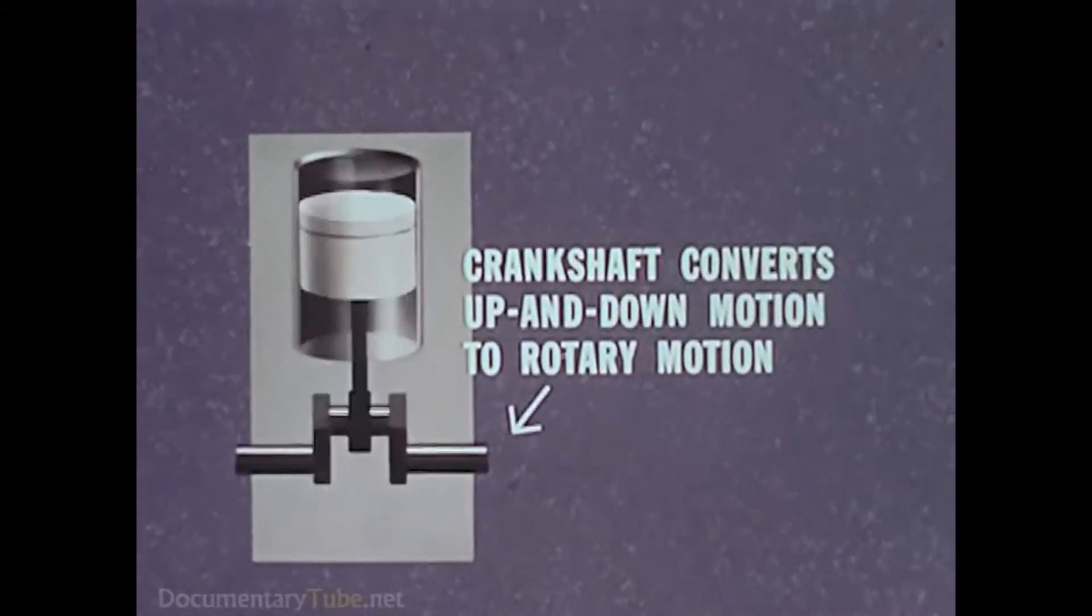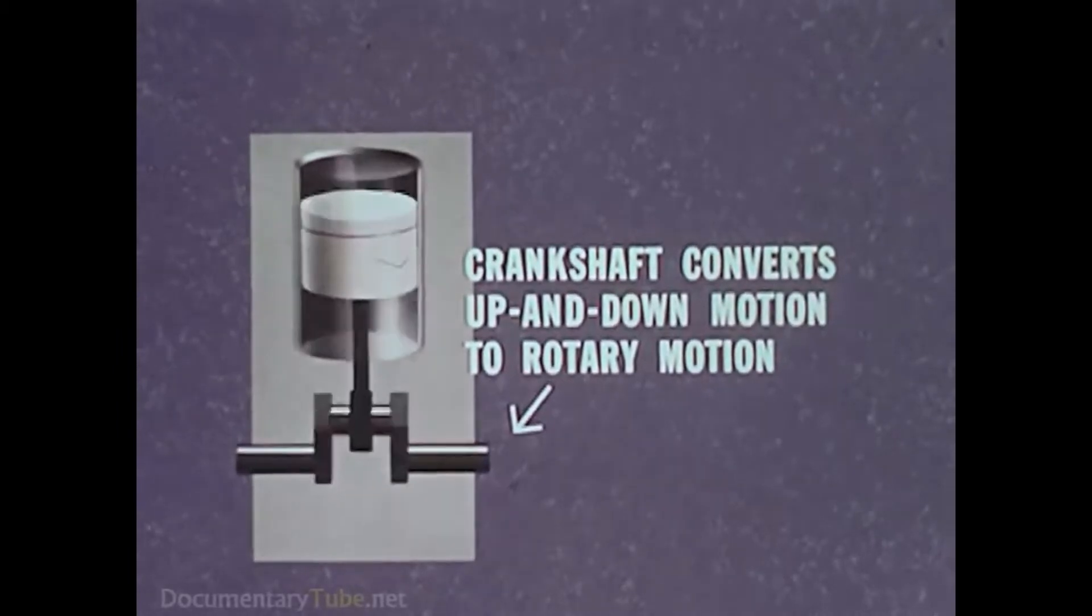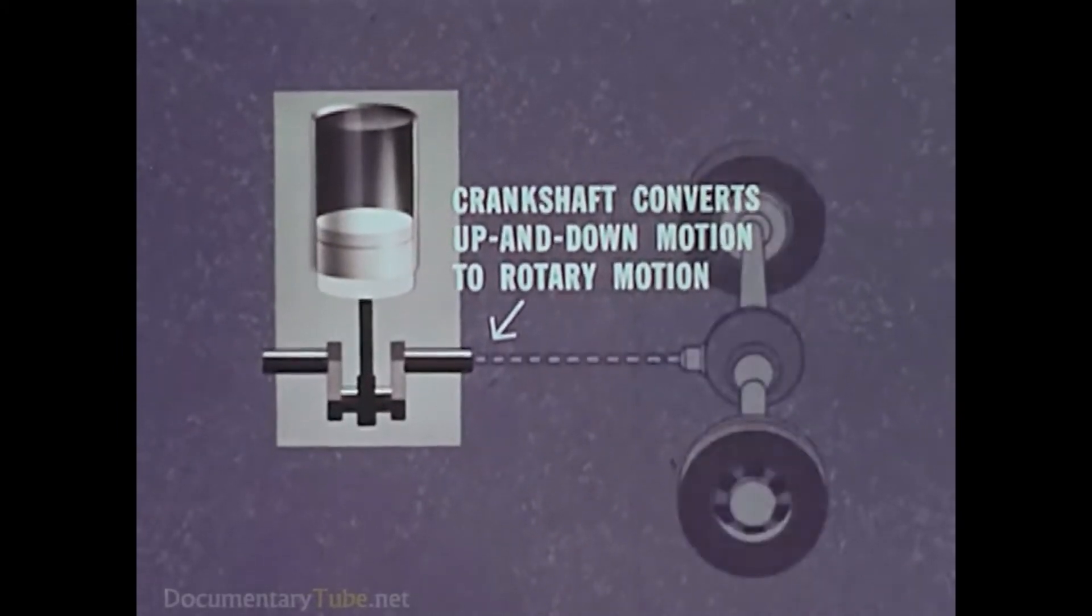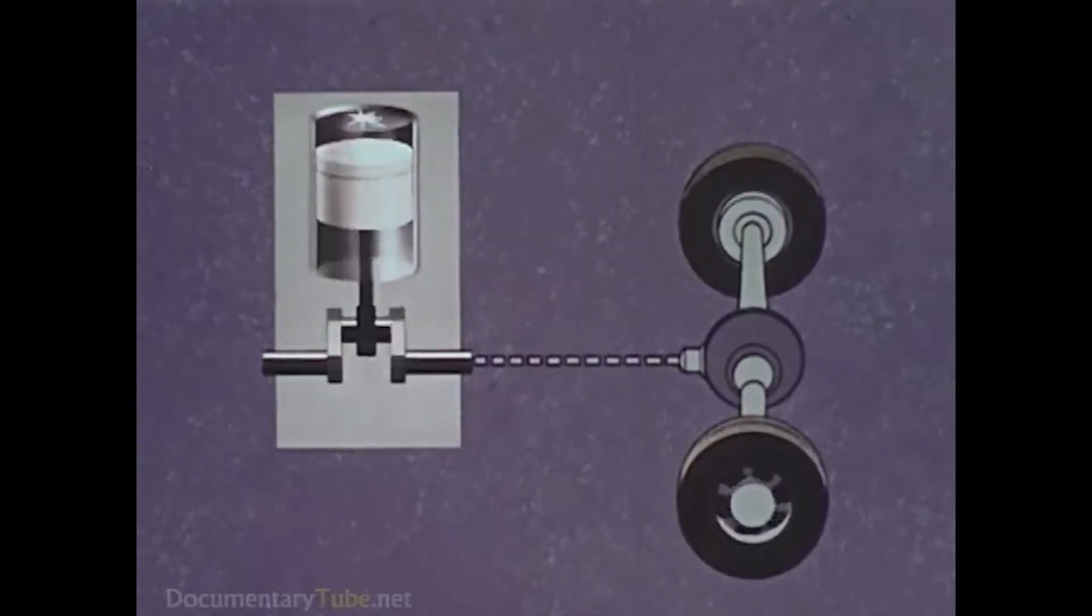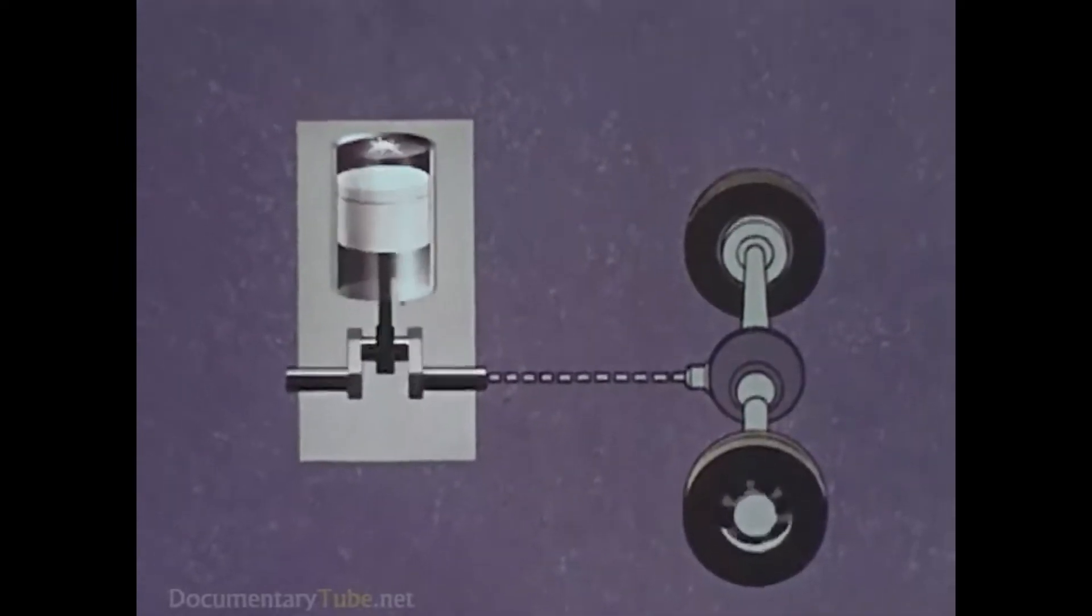The piston rod is connected to a crankshaft, which converts the up-and-down motion into rotary motion. The crankshaft then drives the rear wheels through various machinery, which we'll see later.